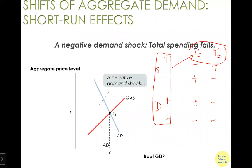In the first slide we see a negative demand shock, so both price and quantity decline. You also want to review what leads to a demand shock versus what leads to a supply shock.